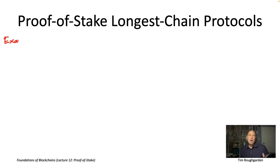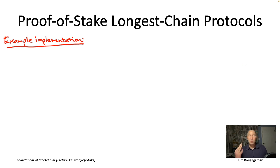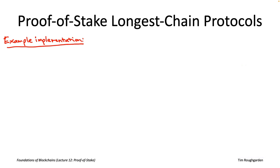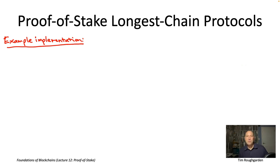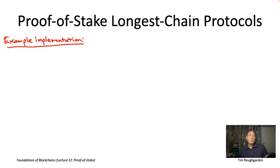So let's now talk through what it might mean to stitch together proof-of-stake random sampling with longest chain consensus. The emphasis of this lecture series is on principles, not protocols, so what I write down on this slide won't map literally to any existing proof-of-stake longest chain protocol. That said, it is representative, and not so far away from how, for example, the Cardano protocol works.